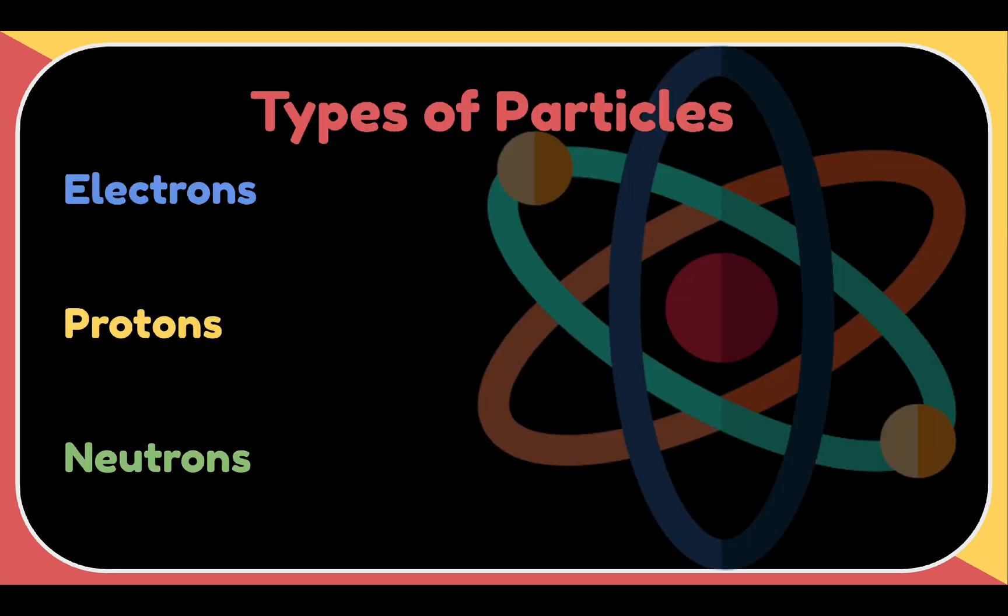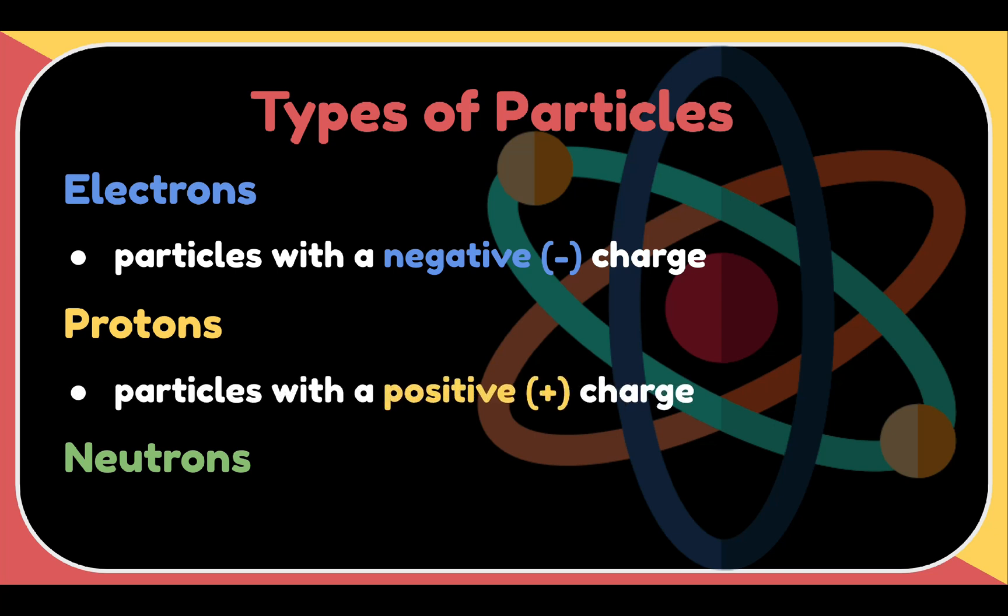We have three types of particles: electrons, protons, and neutrons. Electrons are particles with negative charge. Protons are particles with a positive charge. And lastly, neutrons have no charge. They are neutral.